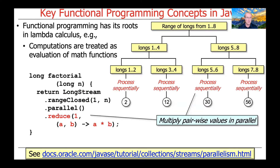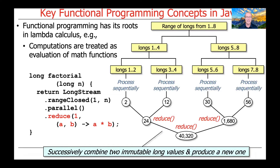We then perform something called a reduction, a classic functional programming method that processes computations in parallel. It multiplies values pairwise in parallel: 1 times 2 yields 2, 3 times 4 yields 12, 5 times 6 yields 30, and 7 times 8 yields 56 — all running sequentially within each pair but in parallel across pairs. As part of the reduction process, reduce successively combines immutable values — values that can't be changed after they're set — producing new immutable values: 2 times 12 yields 24, 30 times 56 yields 1680, and finally 24 times 1680 yields 40,320. All of that takes place in parallel, so it's very fast.